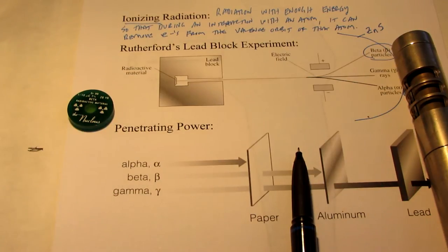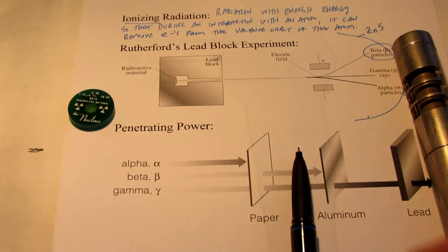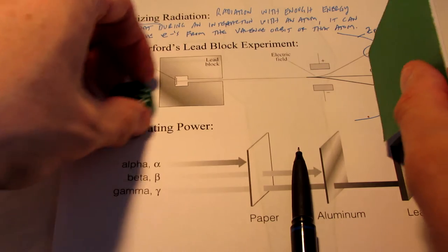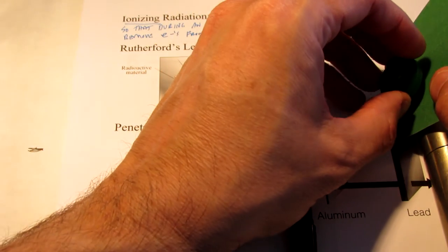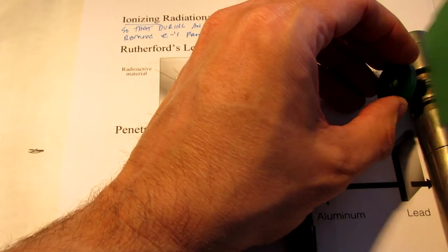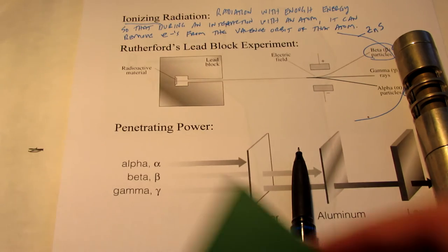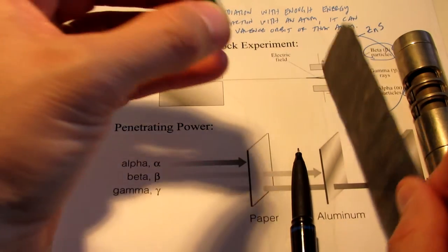Now beta radiation, those particles can't penetrate lead very well. So I have a piece of paper here, and I'm going to put the paper between the Geiger counter and the beta source. And you'll notice that enough particles go straight through. The intensity isn't deterred very much.